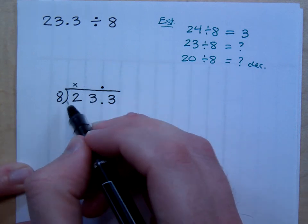Again, since we are dividing by a whole number, go ahead and move your decimal up to the top, move it directly up, and then go and do your long division. How many times does 8 go into 2? It doesn't go in there at all. Does it go into 23?